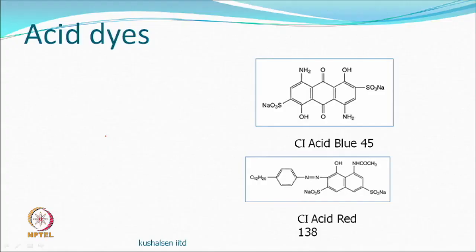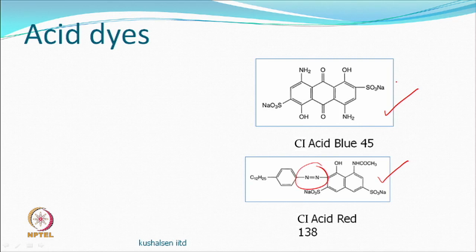Acid dyes include anthraquinone-based and azo-based dyes. They have solubilizing groups and are anionic in nature, similar to direct dyes. People often ask about the difference between direct dyes and acid dyes — both are anionic — and it is worth reviewing that distinction.